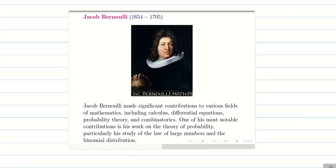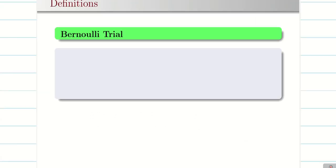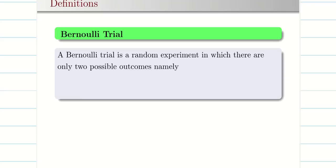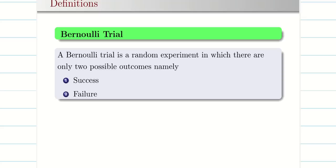Before going to binomial distribution, we need to know what is meant by a Bernoulli trial and Bernoulli's experiment. It is named after the great mathematician Jacob Bernoulli — you can Google his remarkable contributions to probability and mathematics. A Bernoulli trial is a random experiment in which there are only 2 outcomes: your outcome might be a success or your outcome might be a failure.